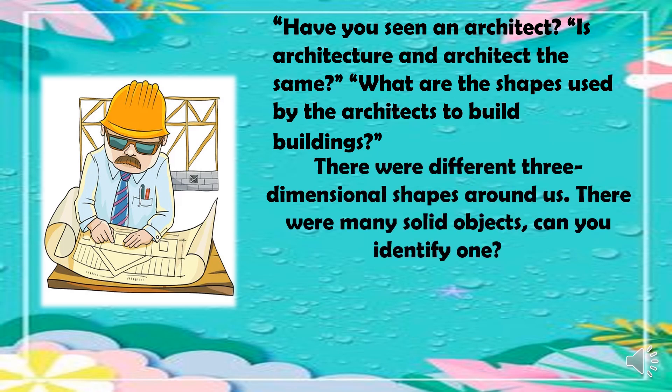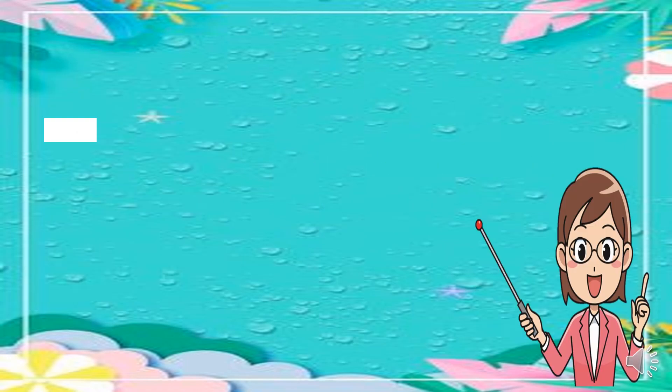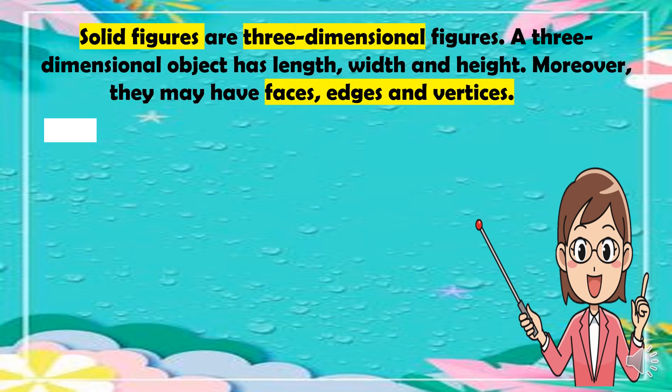There are different three-dimensional shapes around us, and many solid objects. Most of the objects around us have three dimensions: length, width, and height. Solid figures are three-dimensional figures, and a three-dimensional object has length, width, and height.